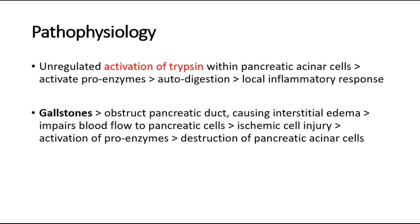Another etiology of pancreatitis is gallstones, which is very commonly seen. When there is gallstone formation, it might go into the common bile duct and then obstruct the pancreatic duct, causing interstitial edema. When there is edema, it will impair blood flow to the pancreatic cells, causing ischemic cell injury. Activation of proenzymes will occur, leading to destruction of the pancreatic acinar cells, causing acute pancreatitis — this is called gallstone pancreatitis.